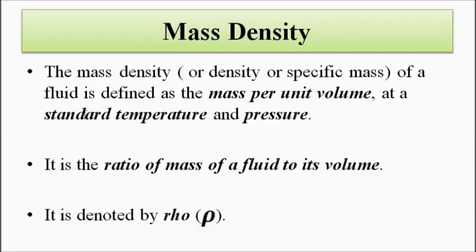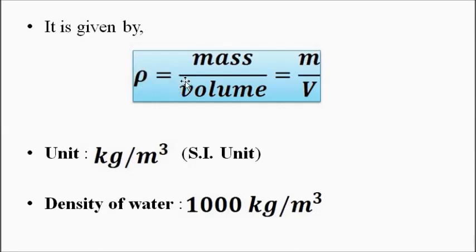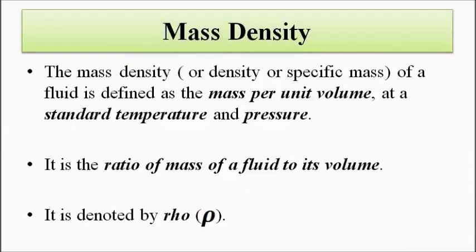The mass density of a liquid or gas is defined as the mass per unit volume of the fluid at a standard temperature and pressure — that is, per unit volume, how much mass is there. It is denoted by the symbol rho, and the formula is: mass density = m/v. In SI units, the unit is kg per meter cube. The standard mass density of water is taken as 1000 kg/m³.